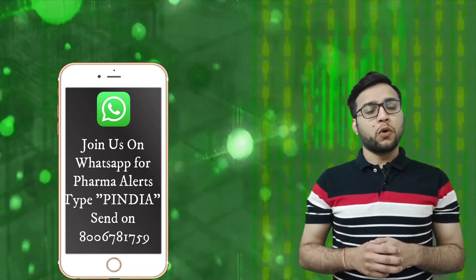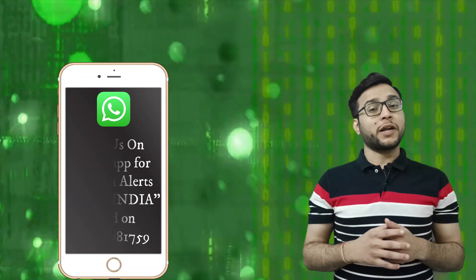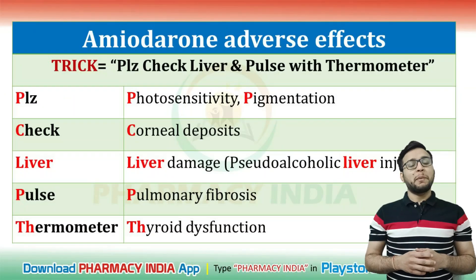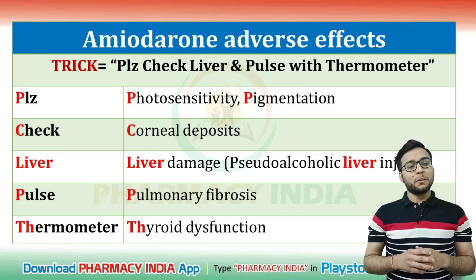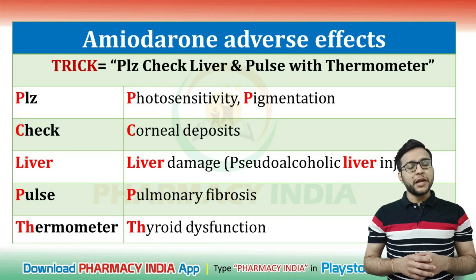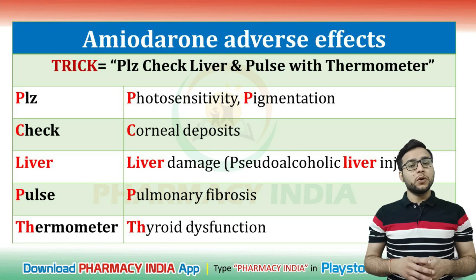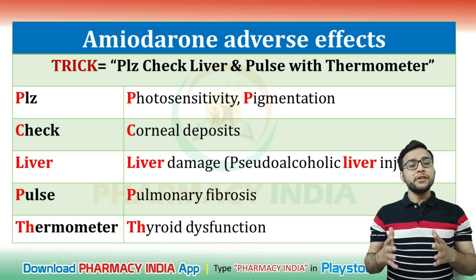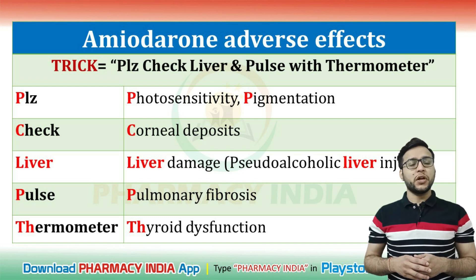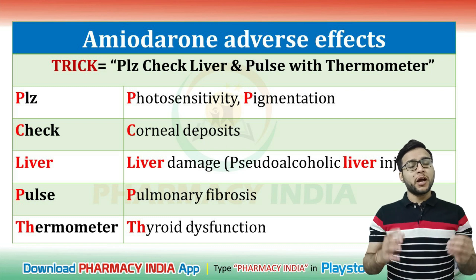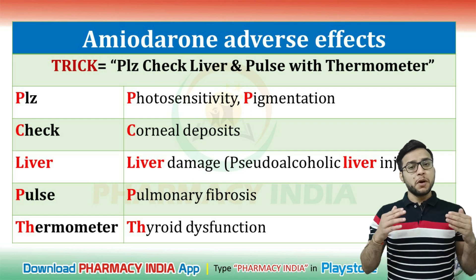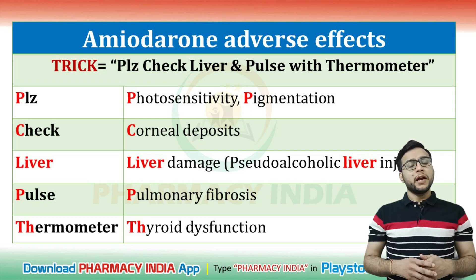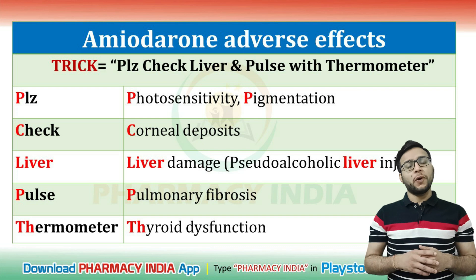To learn the adverse effects of amiodarone, we are going to use a trick: 'Please Check Liver and Pulse with Thermometer.' Here, 'Please' denotes photosensitivity and pigmentation, 'Check' denotes corneal deposits, 'Liver' denotes liver damage — that is pseudo-alcoholic liver injury, 'Pulse' denotes pulmonary fibrosis, and 'Thermometer' denotes thyroid dysfunction.